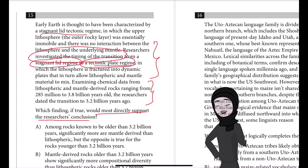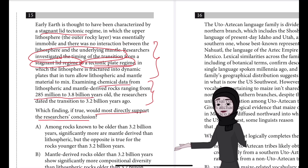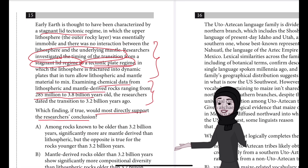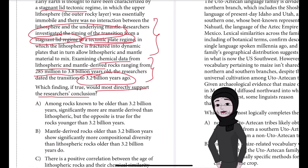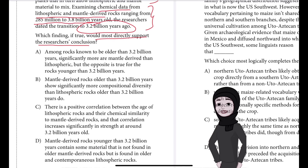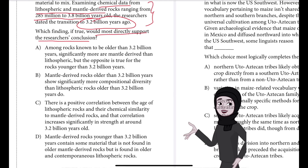They examined the chemical data from lithospheric and mantle-derived rocks ranging from 285 million to 3.8 billion years old, and they are saying that the transition happened 3.2 billion years ago.